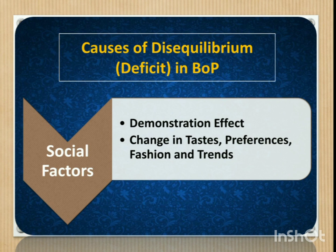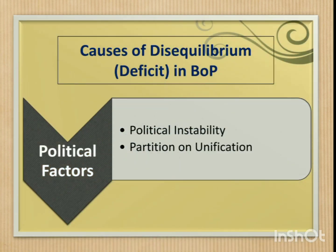Social factors include: demonstration effect — people of underdeveloped countries imitate the consumption pattern of people of developed countries, leading to an increase in the level of imports, which results in a deficit balance in the balance of payment account. And change in tastes, preferences, fashion, and trends — unfavorable changes in tastes and preferences of consumers towards domestic goods lead to a deficit in the balance of payment account. Political factors: political instability of a country has an adverse effect on the balance of payment. Further, partition or unification of a country also affects the balance of payment.